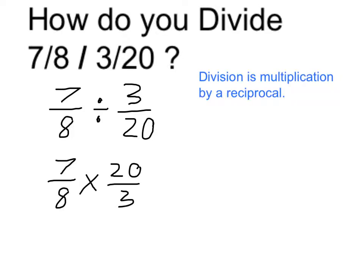I can now see if I can cross simplify. Is there anything on the bottom that goes into anything on the top, or vice versa? Well, 8 and 20 have a common factor.